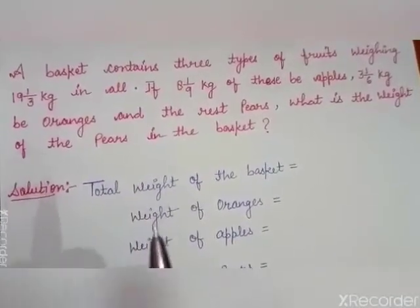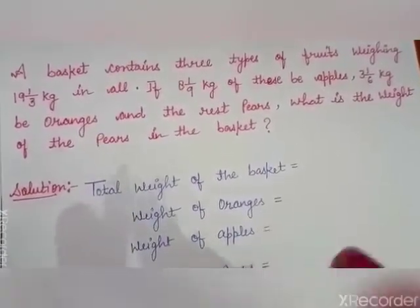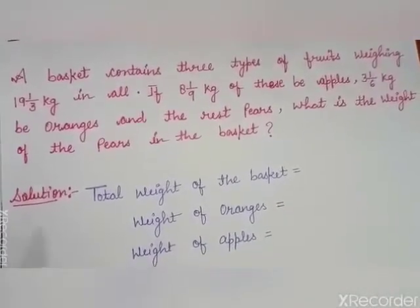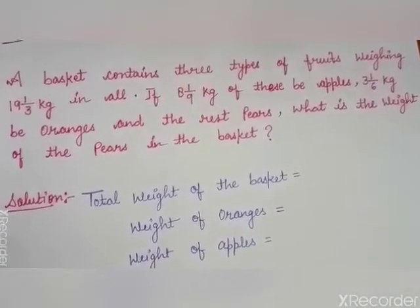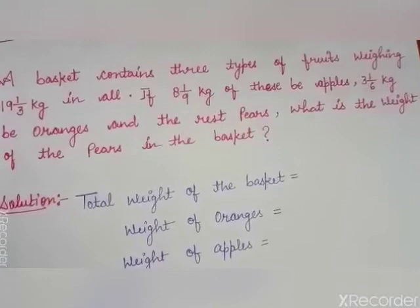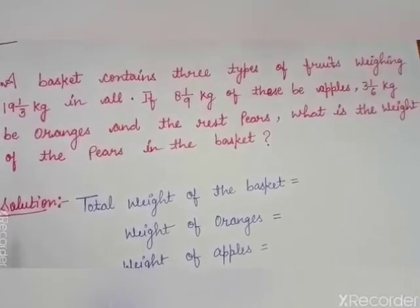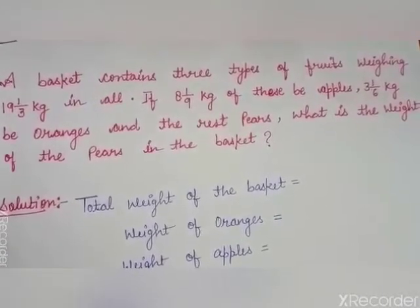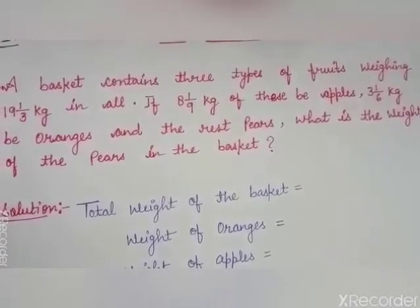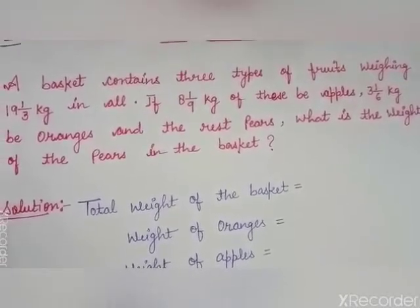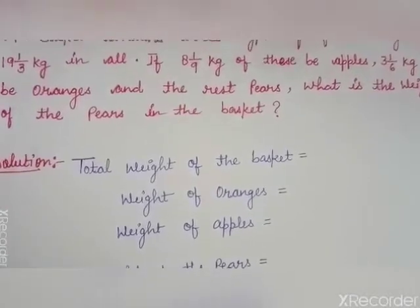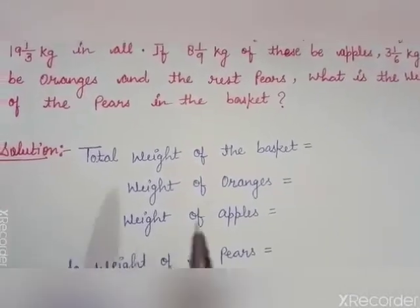That means, you have a fruit basket in which there are three fruits: apples, oranges and pears. The weight of apples and oranges are given, and the total weight of the fruit basket is given. You have to find the weight of pears.